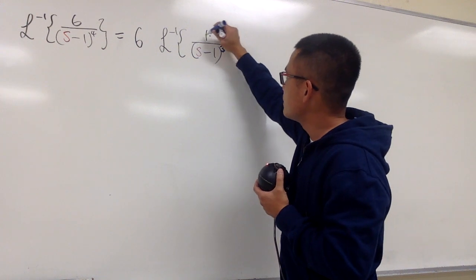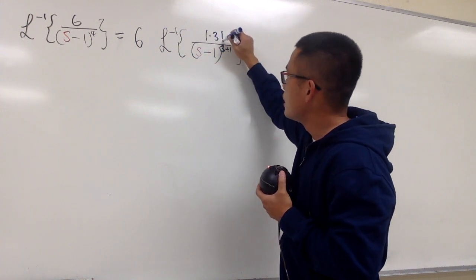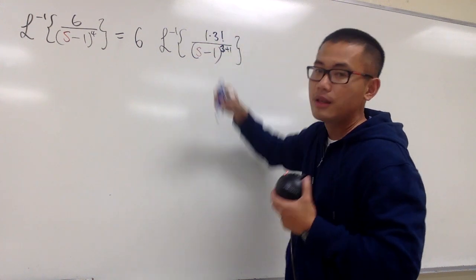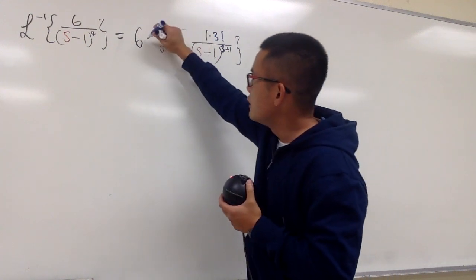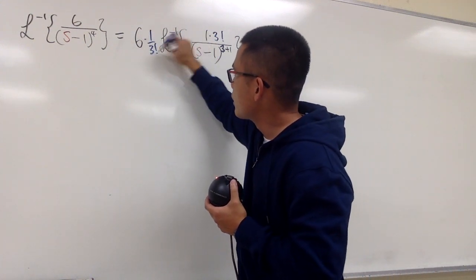But it's okay, because I can go ahead and multiply the 1 by 3 factorial. However, this will change the whole thing. But as long as you remember to divide that out, it will be okay.